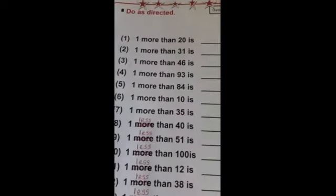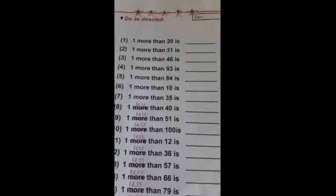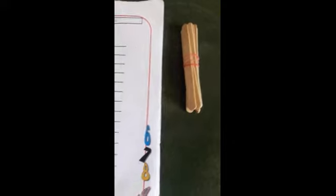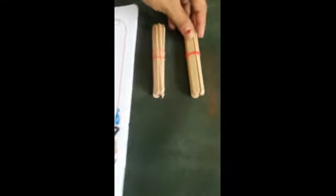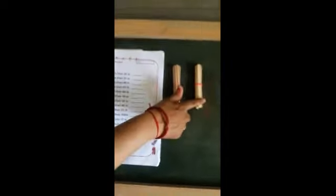Which number is this? Twenty. So let's take twenty using ice cream sticks. This is one ten and this is two ten — so this is twenty. Now, one more than twenty means we add one more stick. So twenty plus one equals twenty-one.